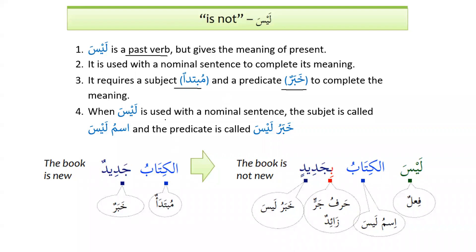When لَيْسَ is used with a nominal sentence, the subject is called إِسْمُ لَيْسَ and the predicate is called خَبَرُ لَيْسَ. One more important thing: it is called الفعل المنقوص — a defective verb — because it cannot communicate its meaning by itself.